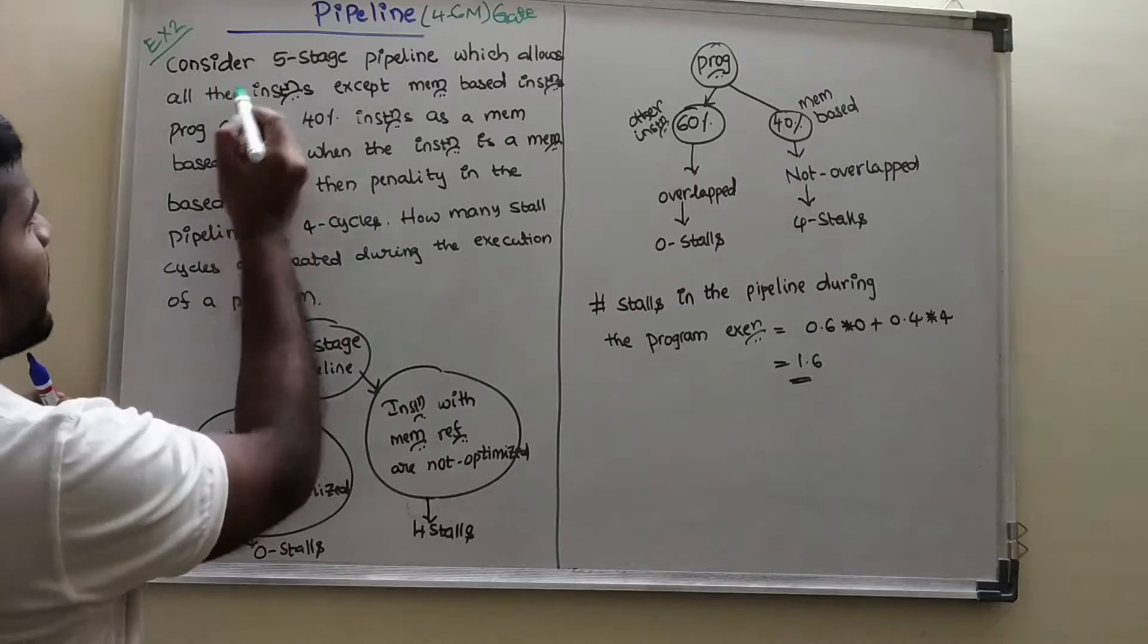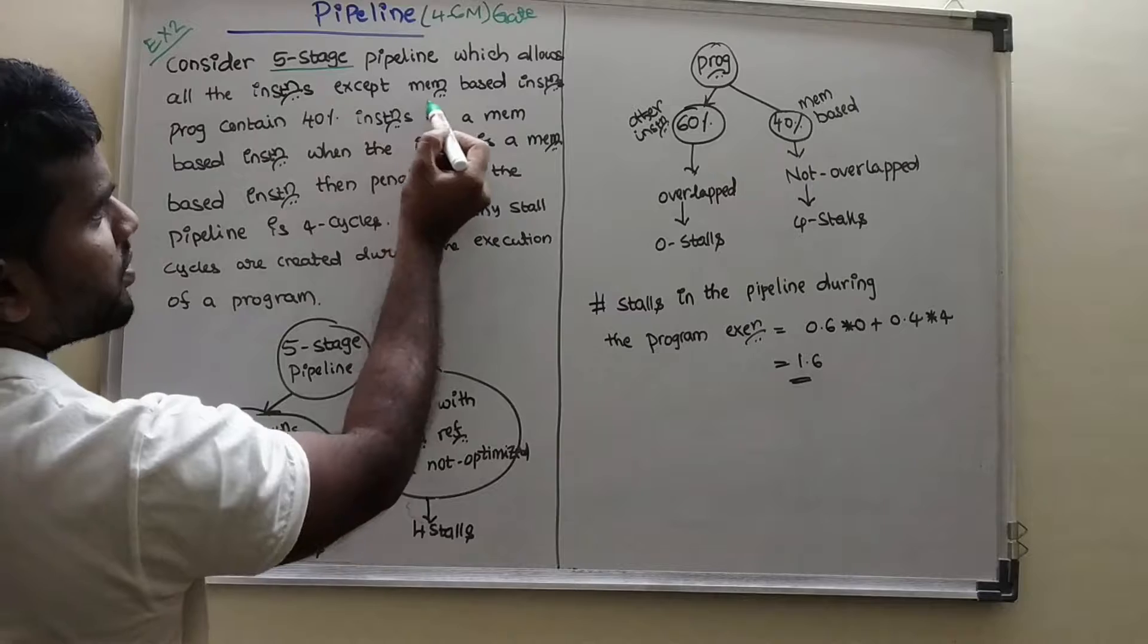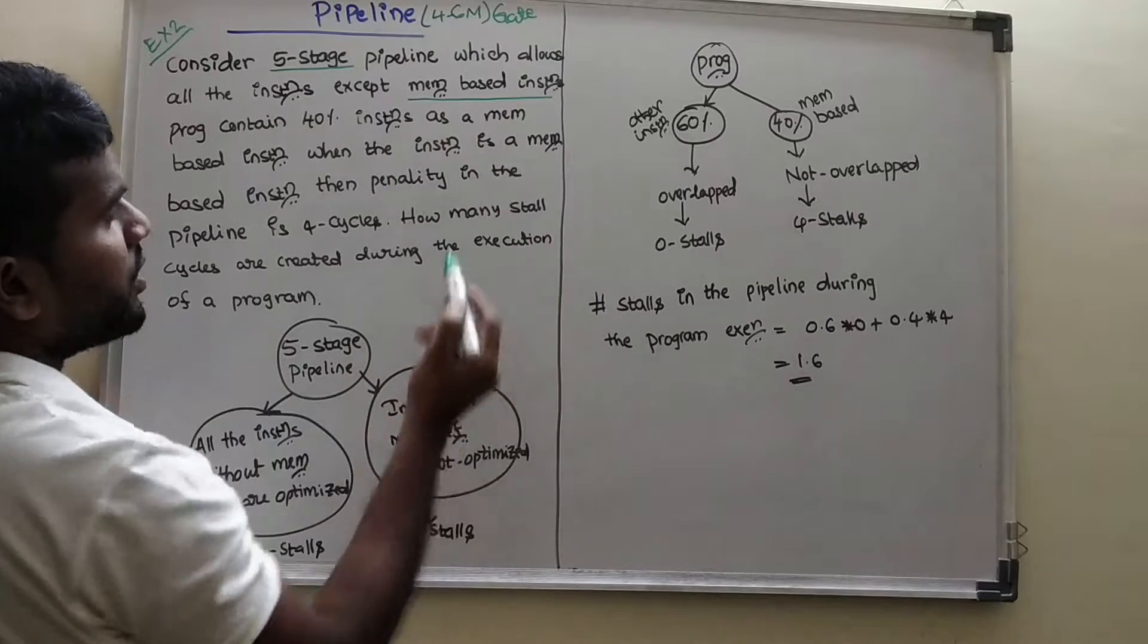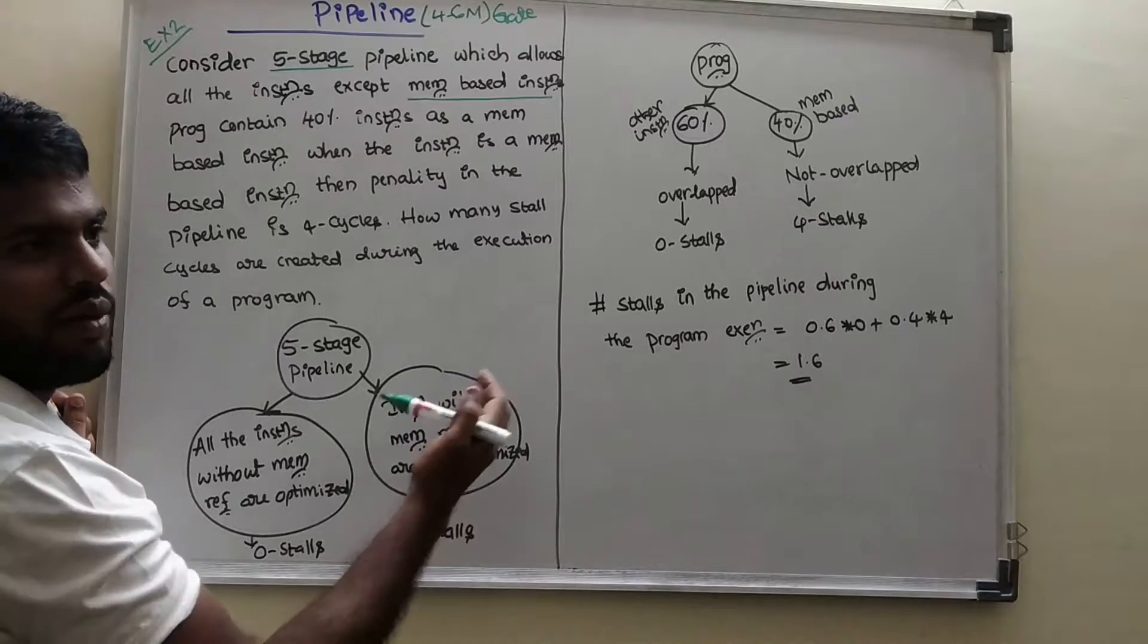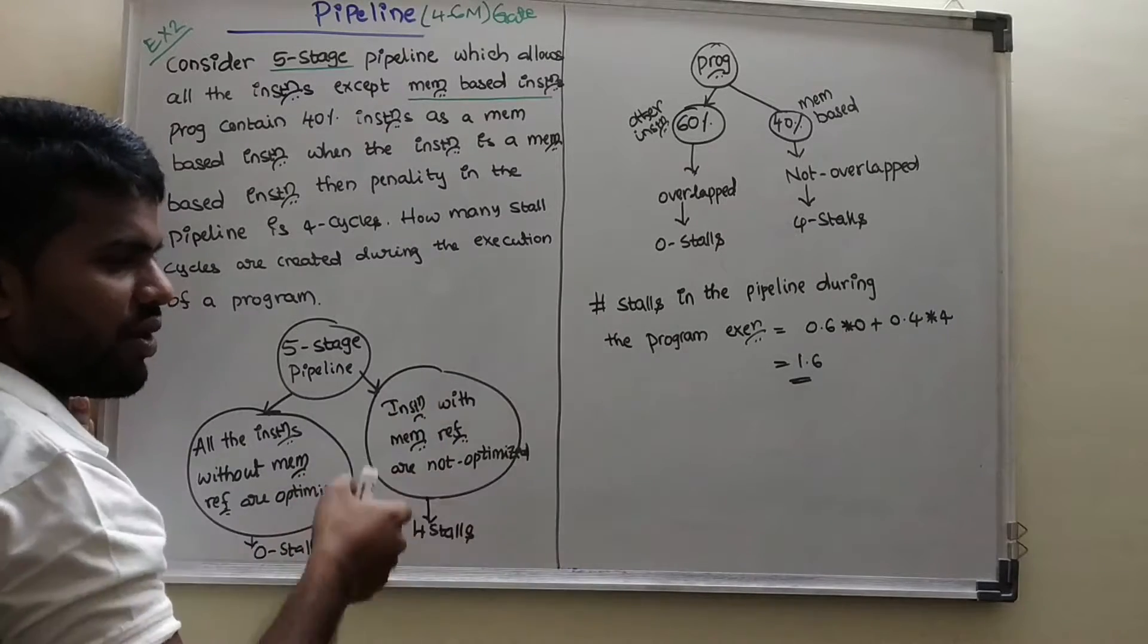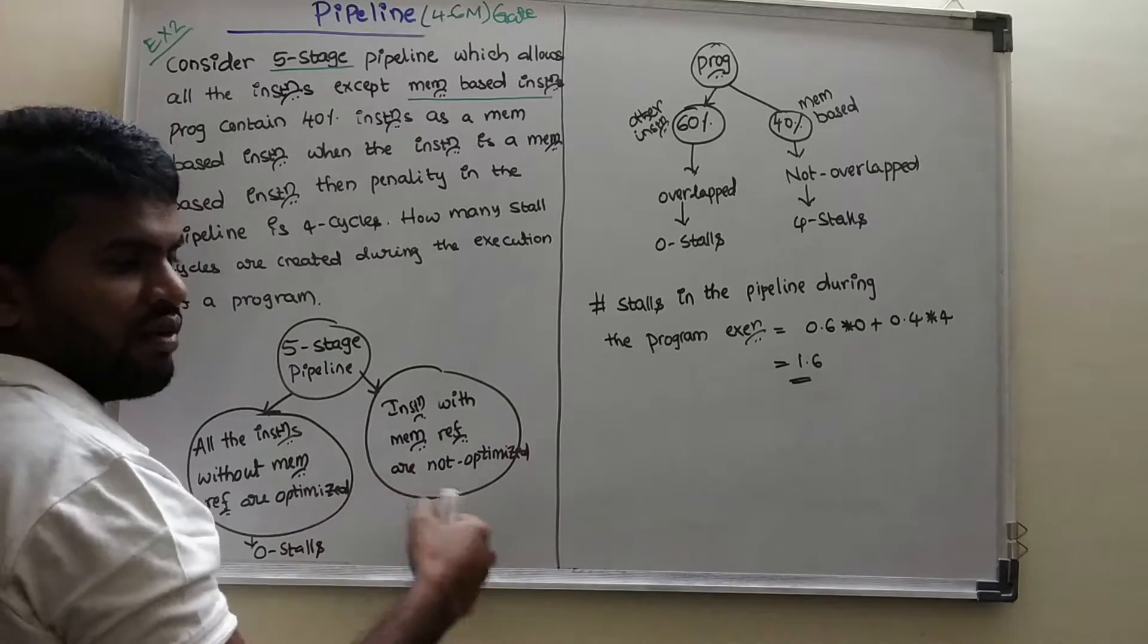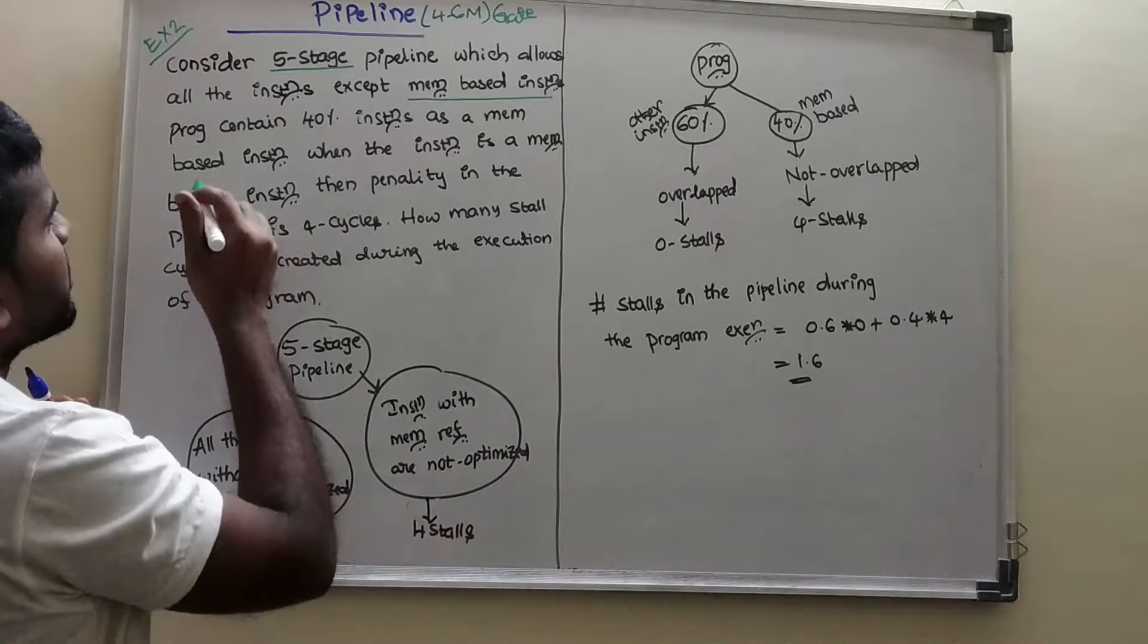Here, consider a 5 stage pipeline which allows all the instructions except the memory based instructions. In memory management, whatever instruction is memory from, we have to take from memory or we have to keep it from our cache to memory. Then it is the memory based instructions.